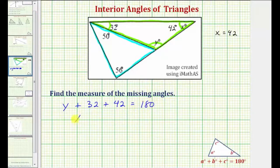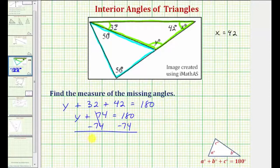So solving for y, we have y plus, well 32 plus 42 is equal to 74. And then subtracting 74 on both sides. And simplifying, we have y equals 180 minus 74 is equal to 106.